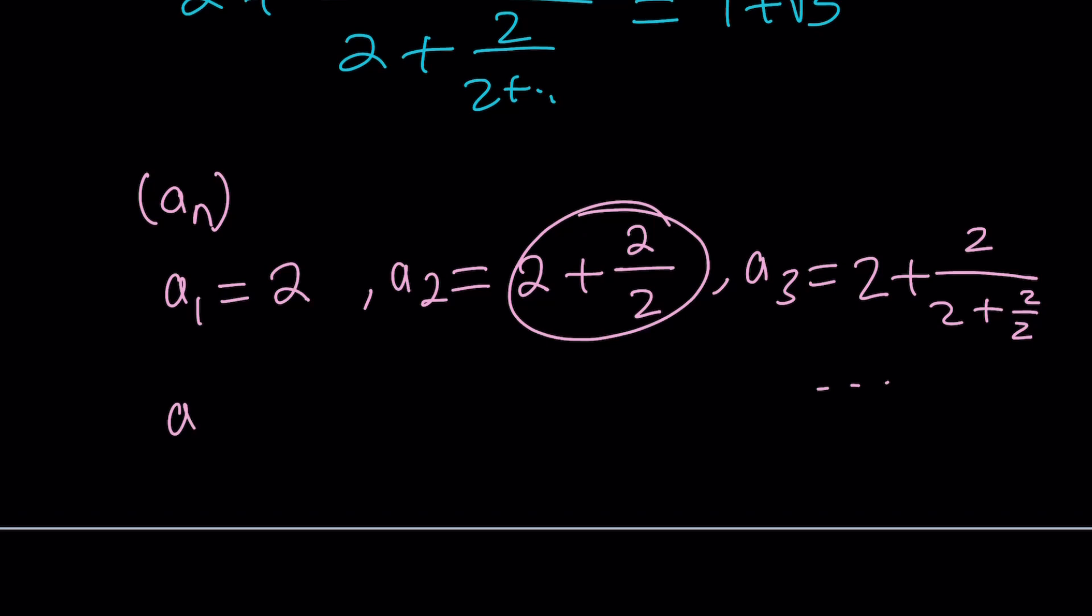a sub n plus 1 equals 2 plus 2 divided by a sub n. So this clearly defines my sequence because I gave you the first term and then how to get the next term from there. Make sense?